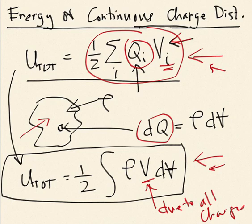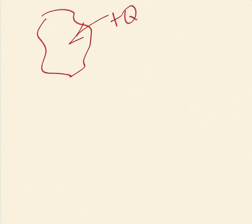I have two expressions now, one for point charges, one for continuous distribution. Let me do one more thing in this video before I quit, and that is consider now the case of a conductor. So, if I have a conductor, and I put some charge on it, plus Q, and then ask the question, what does it take to assemble that charge, what's the energy stored in that charge on this conductor?